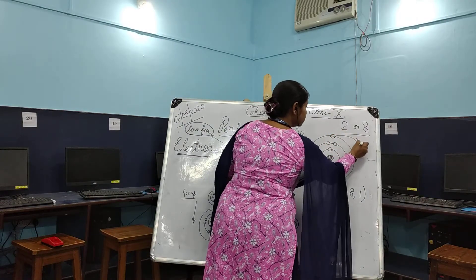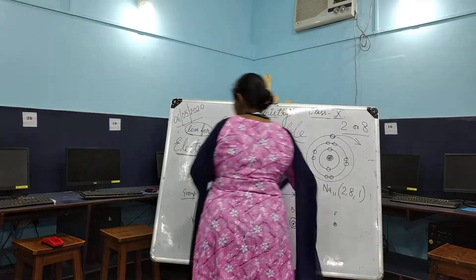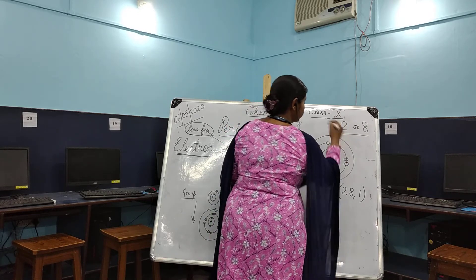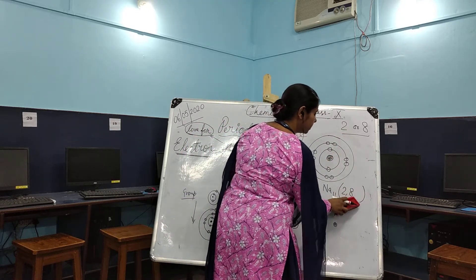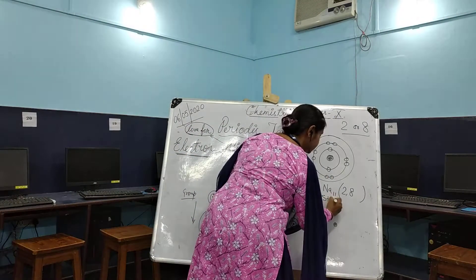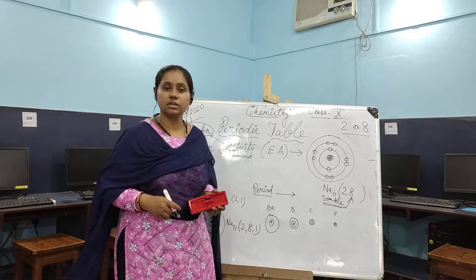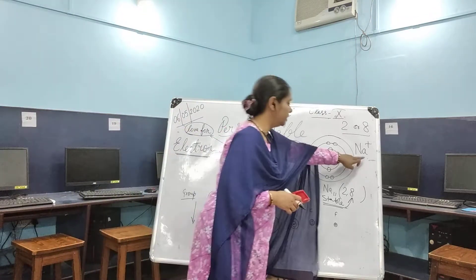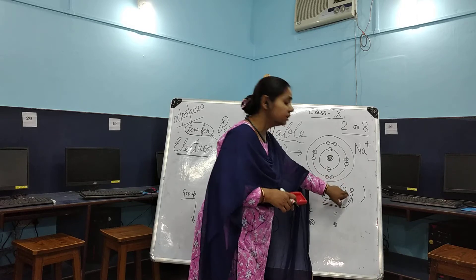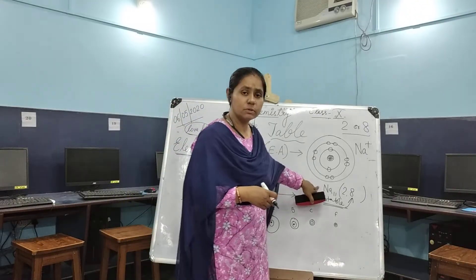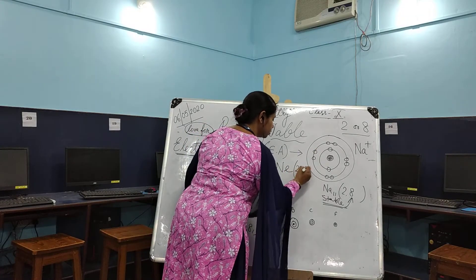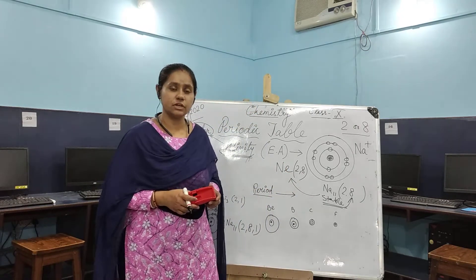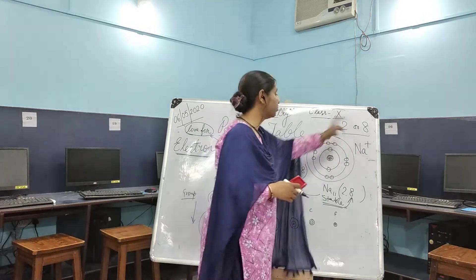If sodium donates this electron completely, the electron moves out of orbit, and the electronic configuration becomes 2,8. This is a stable electronic configuration. This gives you Na⁺ — a cation — because sodium has already reached the nearest noble gas configuration, which is Neon. The electronic configuration of Neon is also 2,8.